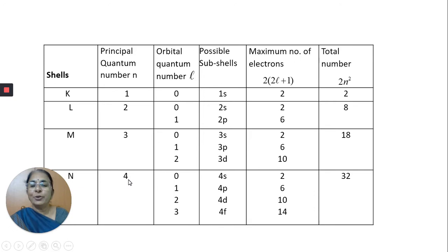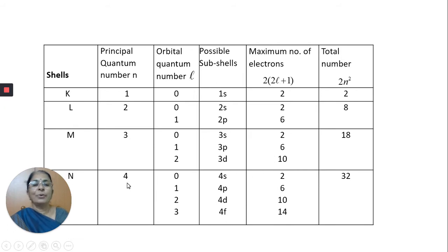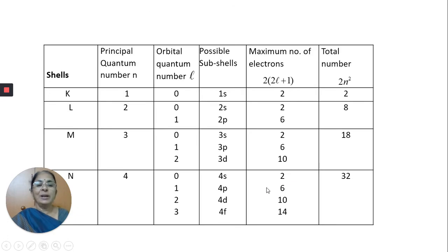For n=4, L can have values 0, 1, 2, 3 — that means 4 sub-shells. If L=0, the sub-shell is written as 4S; L=1 means 4P; L=2 means 4D; L=3 means 4F. The number of electrons in a sub-shell is calculated using the formula 2(2L+1). When L=0, that gives 2×1=2 electrons. When L=3, that gives 2×7=14 electrons. The total number of electrons in that orbit is given by 2n², so for n=4 it is 2×16=32.